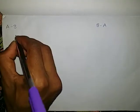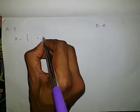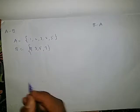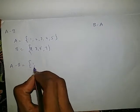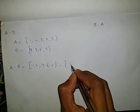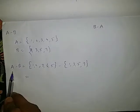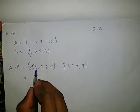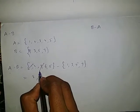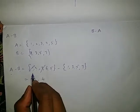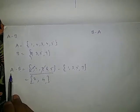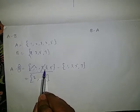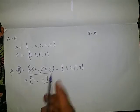Next, A minus B. Set A = {1, 2, 3, 4, 5} and set B = {1, 3, 5, 7}. For A minus B, we check only set A and remove the elements which are also in B. 1 is in B — remove it. 2 is not in B — keep it. 3 is in B — remove it. 4 is not in B — keep it. 5 is in B — remove it. So A minus B = {2, 4}.